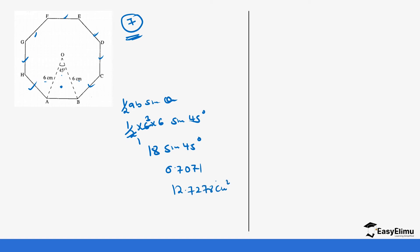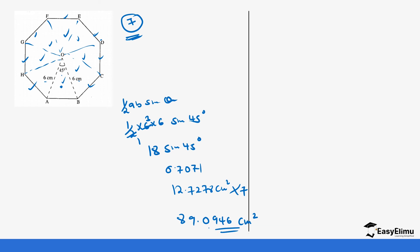That gives us 12.7278 cm² — but remember, this is the area of just one triangle. To get the total area, we account for all seven triangles formed: one, two, three, four, five, six, seven. Multiplying 12.7278 × 7 gives us 89.0946 cm², which is the area of this regular heptagon.